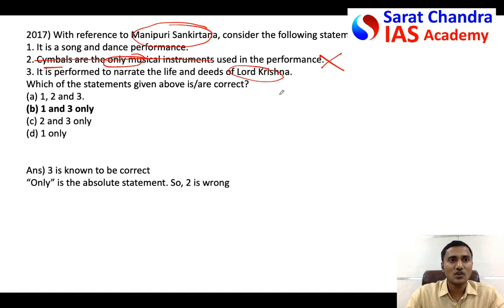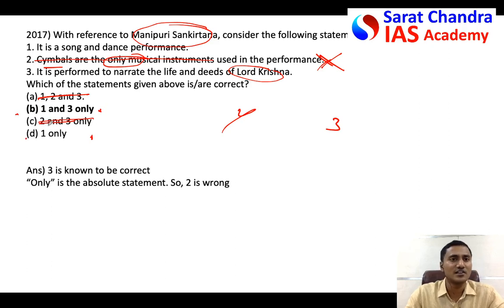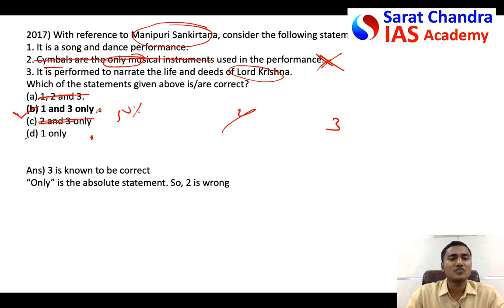I also have pre-existing knowledge — I know that Manipuri dance is based on Lord Krishna, so statement three is definitely correct. Now, among one and two I can eliminate two using the absolute statement rule. With statement three confirmed and two eliminated, the answer narrows to options B or D. If you know statement three is correct, you go for that option; if not, you're still at 50% probability — which is good.